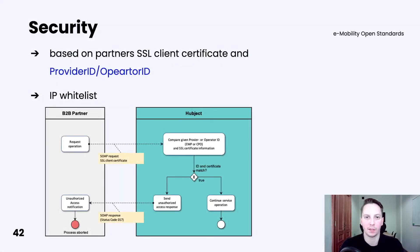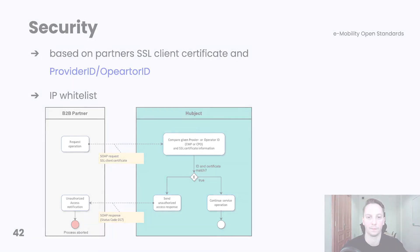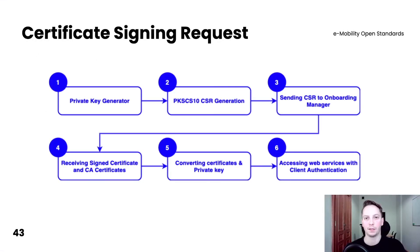The security aspect of OICP protocol is also very convenient. Hubject will compare if the provider ID or operator ID is compliant with your SSL client certificate in every request. This should prevent the situation where a partner performs an operation in the name of another partner just by providing the correct ID. If there is a mismatch, then the 017 status code should be returned with an unauthorized access message. Also remember that Hubject will validate if the IP is on the whitelist, so your server must have a static IP.